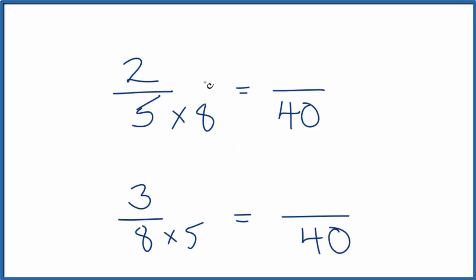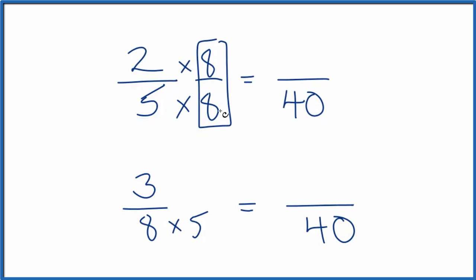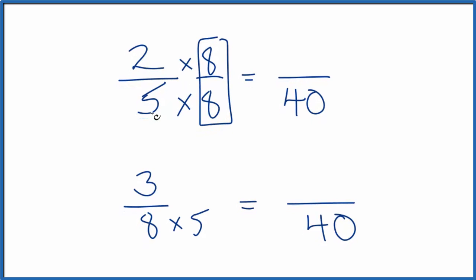The thing is, I can't just multiply by 8. I have to multiply the top and the bottom by 8. That's because 8 over 8, if you divide 8 by 8, you get 1. So 2 fifths multiplied by 8 over 8 gives me 16 over 40. But this is the same as this, because I just multiplied by 1.